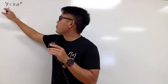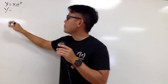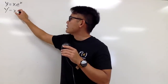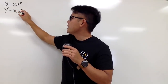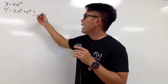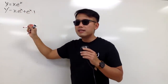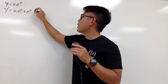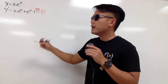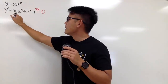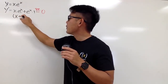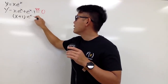So let me get the first derivative y'. I need to use the product rule: x times the derivative of the second, which is still e to the x, and add it with e to the x times the derivative of the first. I'll set this equal to 0 to find the critical numbers. From here, we can factor out and write e to the x times (x + 1).